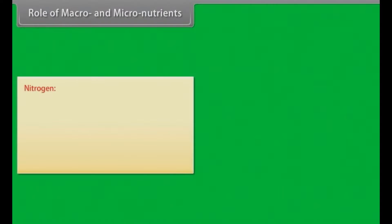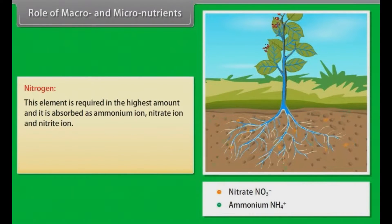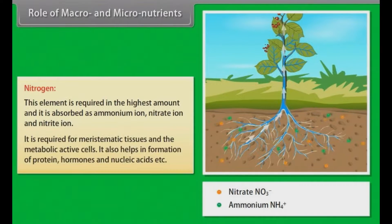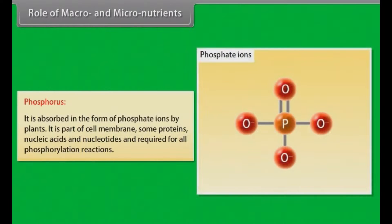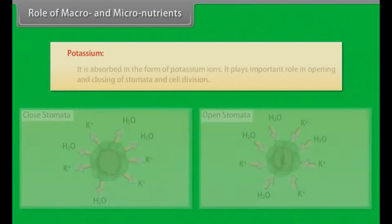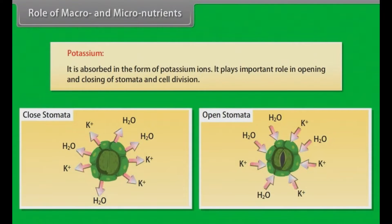Role of macronutrients: Nitrogen is required in the highest amount and is absorbed as ammonium, nitrate, and nitrite ions. It is required for meristematic tissues and metabolically active cells, and helps in formation of proteins, hormones, and nucleic acids. Phosphorus is absorbed as phosphate ions; it is part of cell membranes, proteins, nucleic acids, and nucleotides, and is required for all phosphorylation reactions. Potassium is absorbed as potassium ions and plays an important role in opening and closing of stomata and cell division.